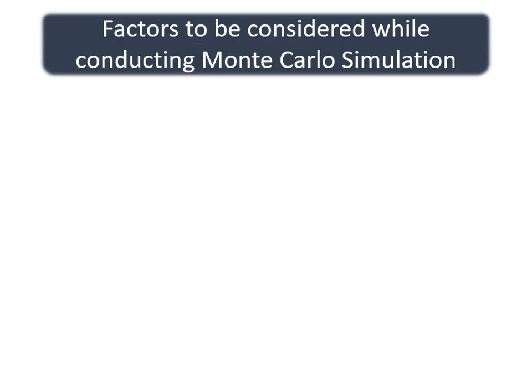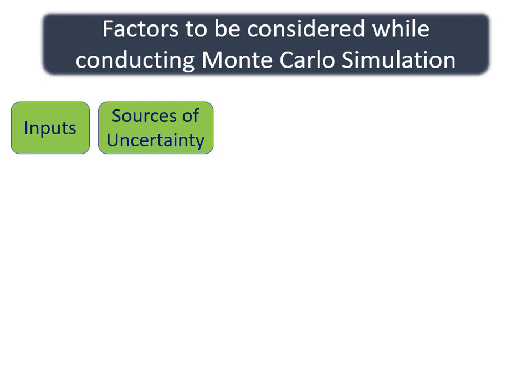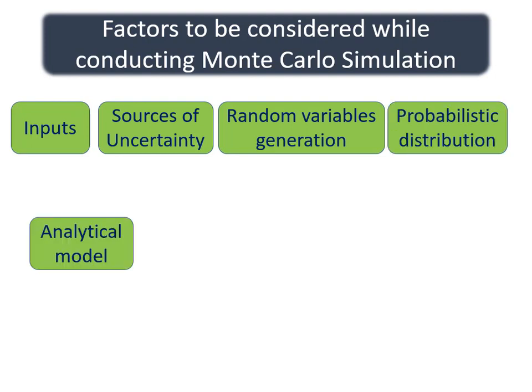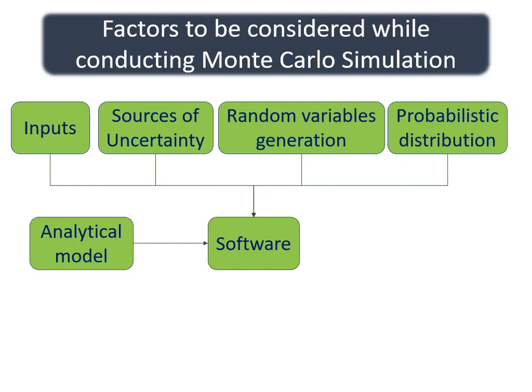There are some factors to be considered while conducting Monte Carlo simulations. There must be variables which can be taken as inputs for the simulation. We must see whether there are any sources of uncertainty. If there are uncertainties, then the process of generation of random variables must be standard and must follow a certain probabilistic distribution. An analytical model which governs the scenario must be developed, and the constraints and variables to be incorporated in the model must be selected in such a way that the model represents the scenario as closely as possible.